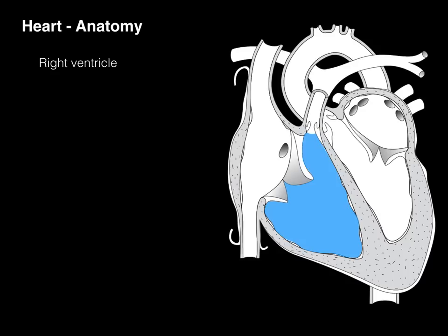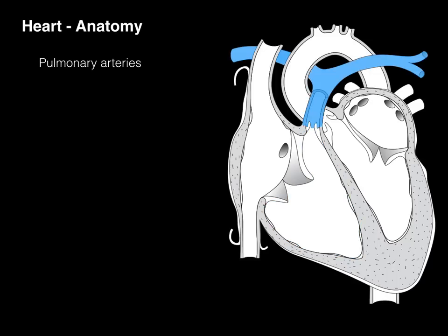The right ventricle receives all deoxygenated blood from the body and the coronary circulation — the systemic and coronary circulation — and then sends it through the pulmonary valve. 'Pulmonary' means lung, so this valve sends blood through the pulmonary valve into the pulmonary arteries out to the lungs. This is an example where an artery is taking deoxygenated blood. Remember: arteries always take blood away from the heart — A for away. They go to the lungs for gas exchange. The four pulmonary veins, two on each side, then bring oxygenated blood back and dump it into the left atrium.